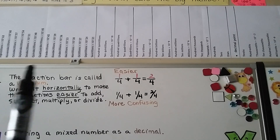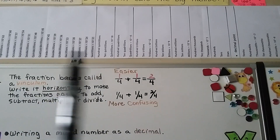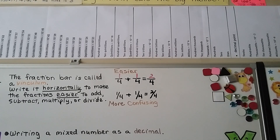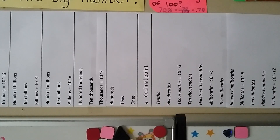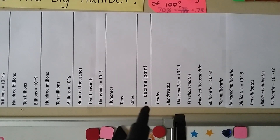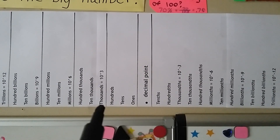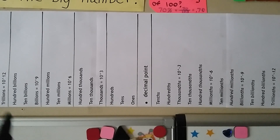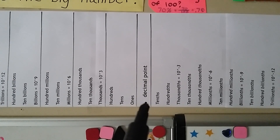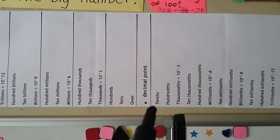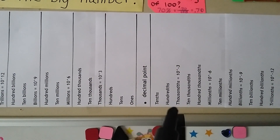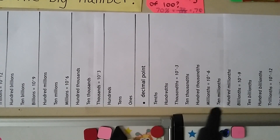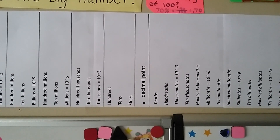Above the board there are many place values. Here's the decimal point. We have our ones, tens, hundreds, thousands, ten-thousands, hundred-thousands, and it keeps going to the left. And to the right of the decimal point we have tenths, hundredths, thousandths, ten-thousandths, hundred-thousandths, millionths, and it keeps going on to the right.